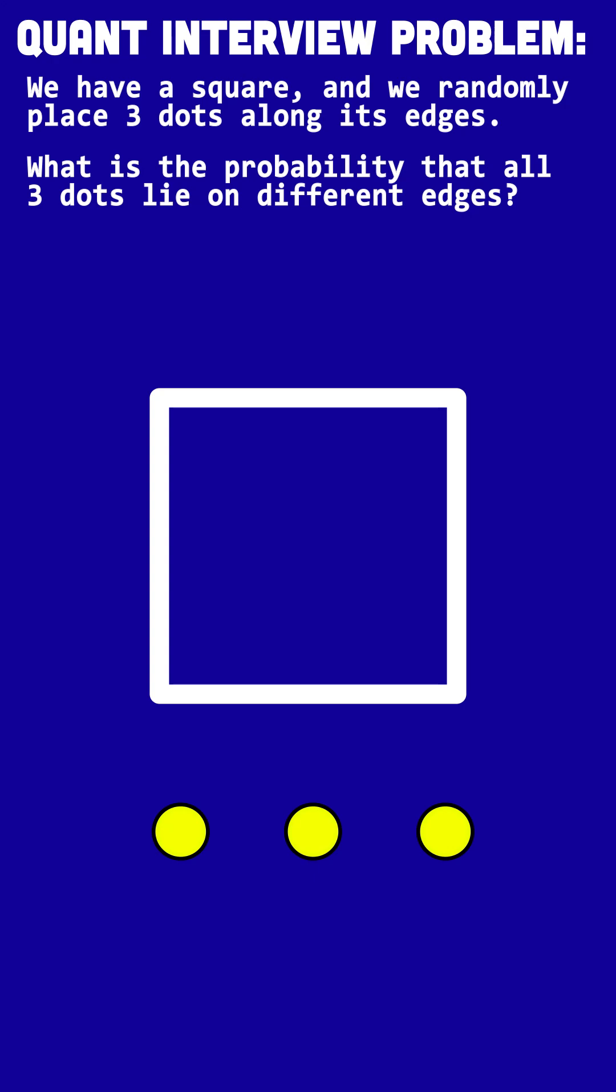So we have a square and we randomly place three dots along its edges. What is the probability that all three dots lie on different edges?